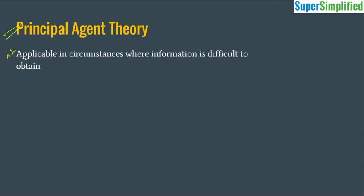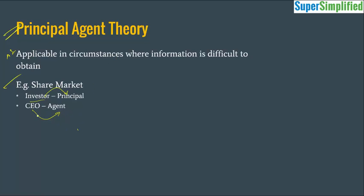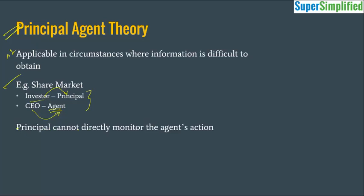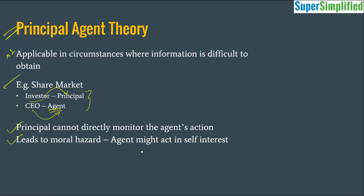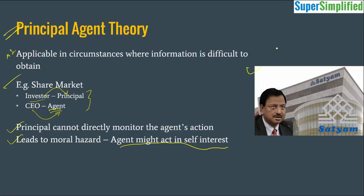Then there is the Principal-Agent Theory, applicable where information is difficult to obtain, such as in the share market. The investor is the principal and the CEO is the agent. The investor puts money into a company and buys shares, while the CEO looks after day-to-day operations. But the investor cannot monitor the company's day-to-day working — they have some information from annual reports, but cannot monitor what is happening inside on a daily basis. The principal cannot directly monitor the agent's actions, leading to moral hazard: the agent might act in self-interest because no one is looking. That is what happened in the famous Satyam case where B. Ramalinga Raju acted in self-interest.